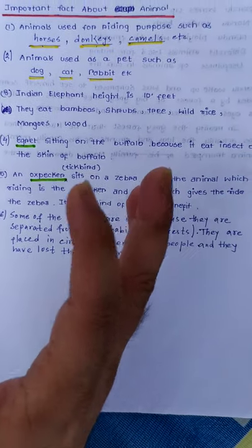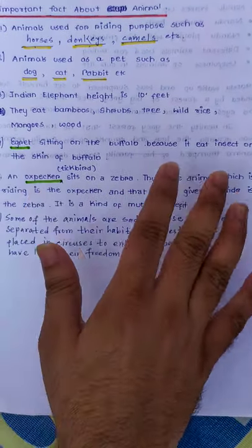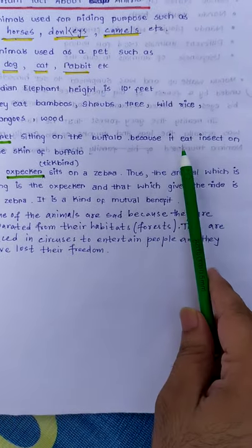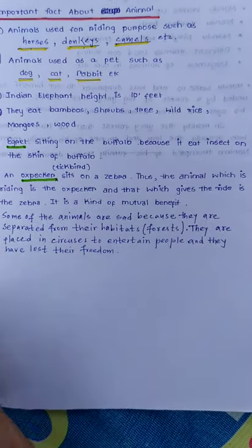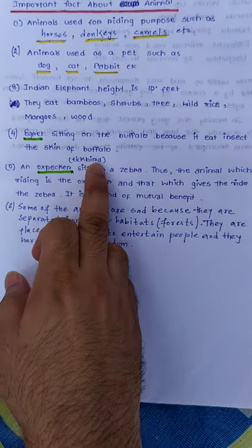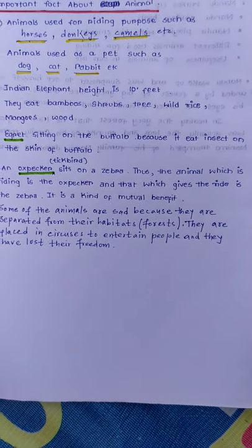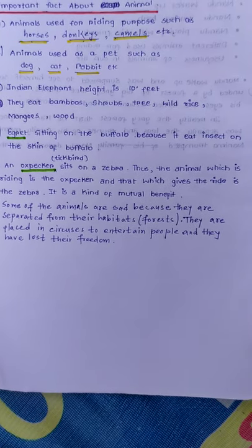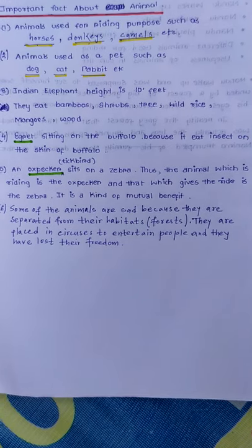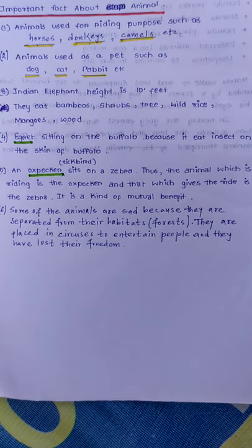Another important relationship found in animals is the mutual relationship. You can see an egret sitting on a buffalo's body — it sits there because of mutual benefit; it eats insects on the skin of the buffalo. Similarly, the oxpecker, also called a tick bird, sits on the zebra's body. The oxpecker gets food and the zebra gets cleaned — this is mutual benefit.